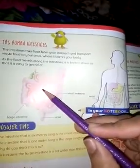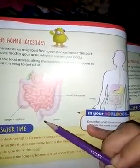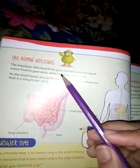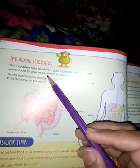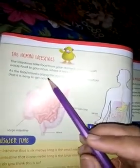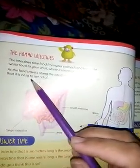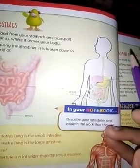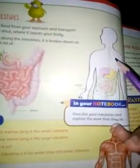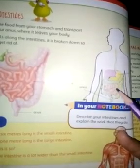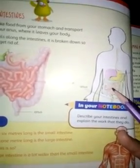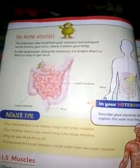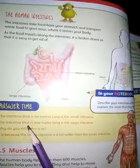Now turn to page number 10. These are the intestines — this is the small intestine, this is the large intestine, and this is our anus. The intestines take food from your stomach and transport waste to your anus, where it leaves your body. As the food travels along the intestine, it is broken down so that it is easy to get rid of. The small intestine absorbs what the body needs, and the rest is passed to the large intestine, from where it is released through the anus.